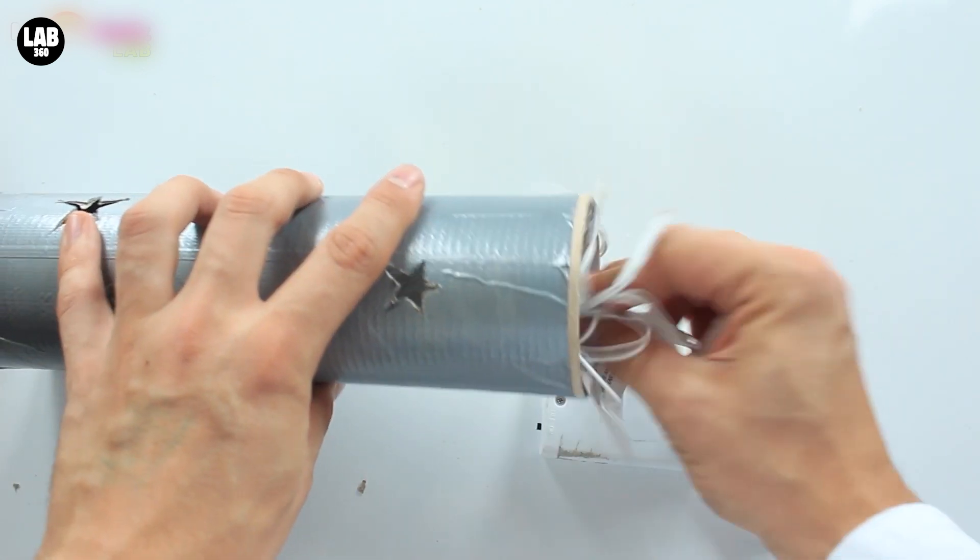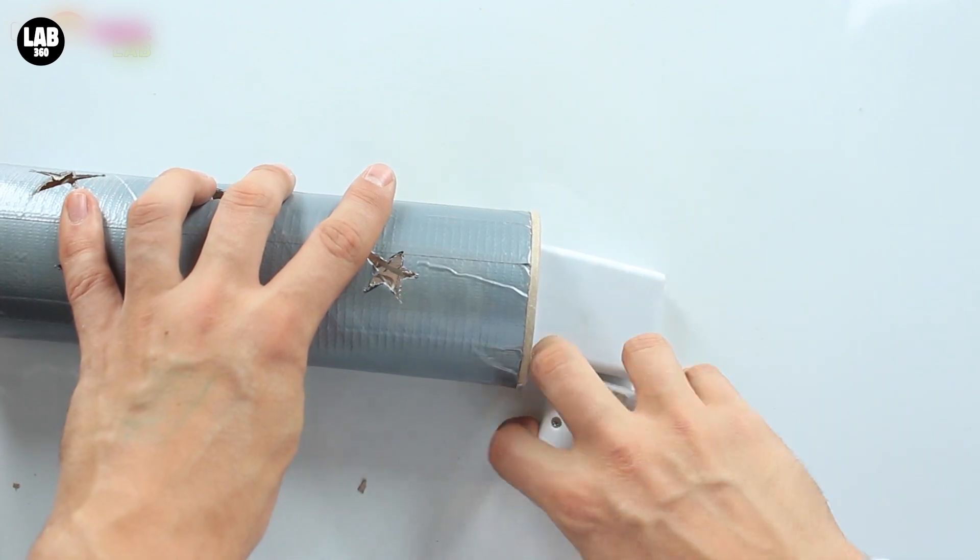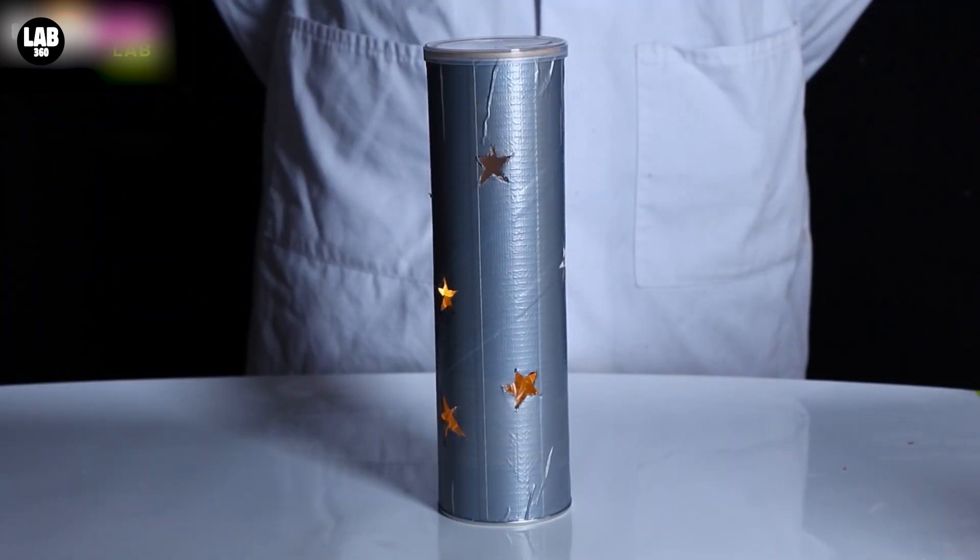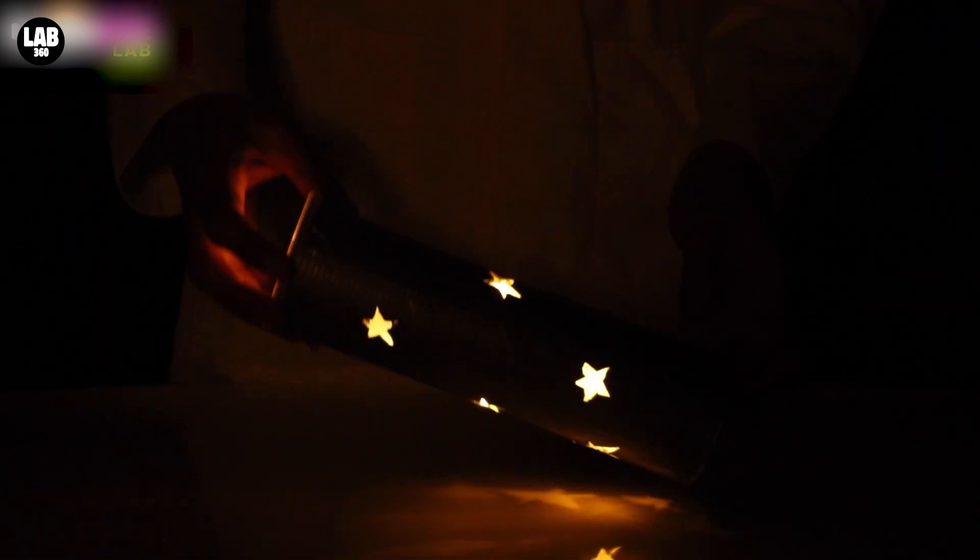you can push your fairy lights inside and leave the batteries on top. You don't have to use battery-operated lights, but it does help to make your nightlight a little bit more tidy. Then all you need to do is turn off the lights.